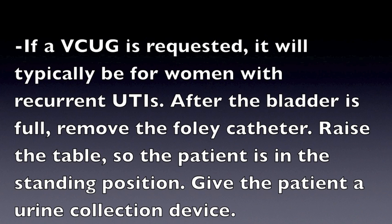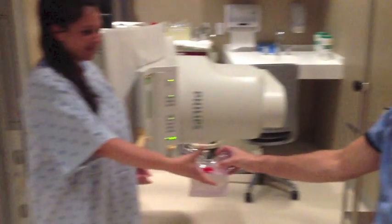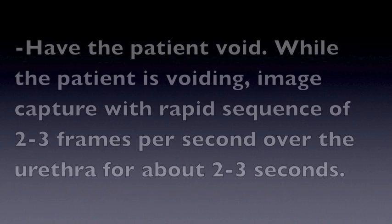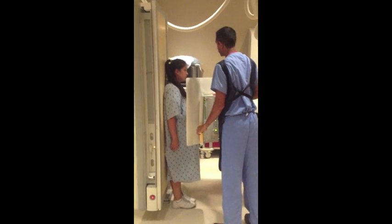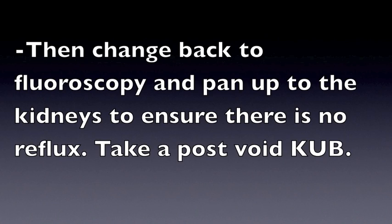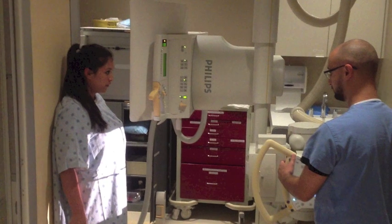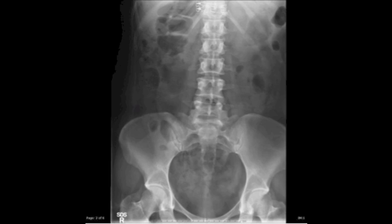If a VCUG is requested, it will typically be for women with recurrent UTIs. After the bladder is full, remove the Foley catheter, raise the table so the patient is in the standing position, and give the patient a urine collection device. Have the patient void. While the patient is voiding, capture a rapid sequence of fluoroscopy images and pan up to the kidneys to ensure there is no reflux. Take a post-void KUB, and this is an image of a post-void KUB.